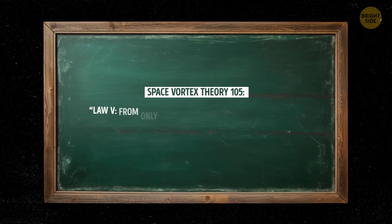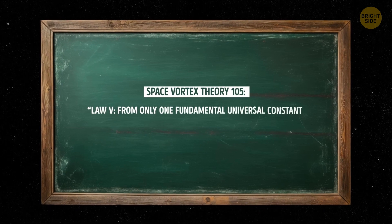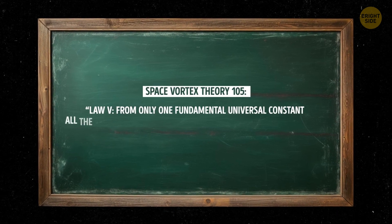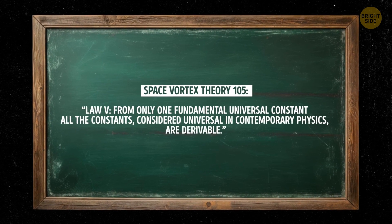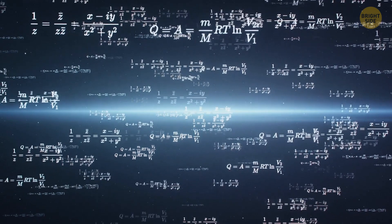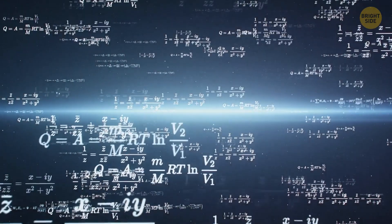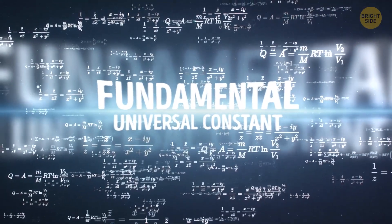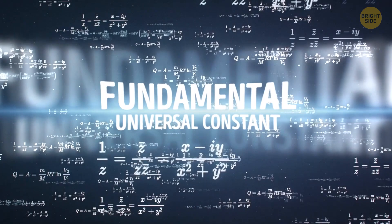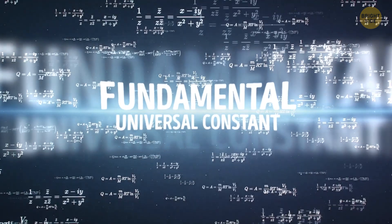Law 5: From only one fundamental universal constant, all the constants considered universal in contemporary physics are derivable. This law states that all the constants considered universal in contemporary physics can be derived from a single fundamental universal constant. It suggests that all the constants in physics are interconnected and can be explained by a single fundamental principle.